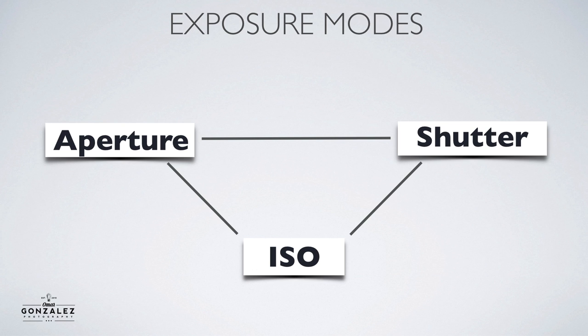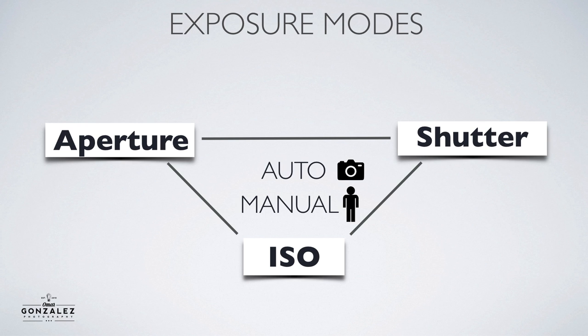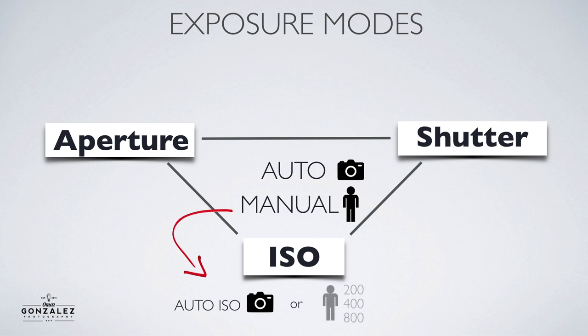Your camera modes are thinking about these three exposure settings but they work in different ways. In auto mode the camera does all three for you. In manual mode you do all three. There's a catch in manual mode though - you can actually take care of aperture and shutter and let the camera handle ISO in the background with auto ISO, or you can be a control freak and pick your ISO specifically. Maybe you don't want a lot of grain so you want 200 or 400, or you don't want to go over 3200.